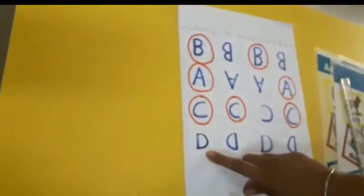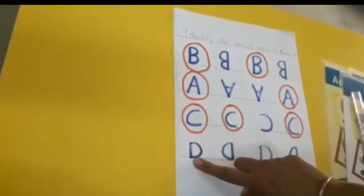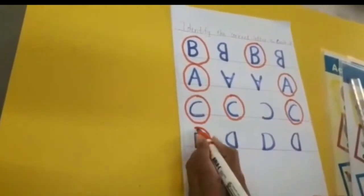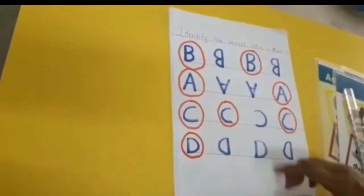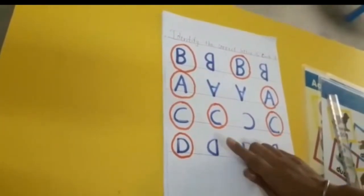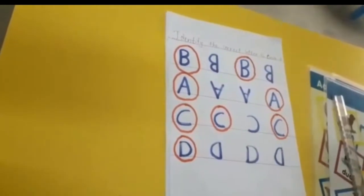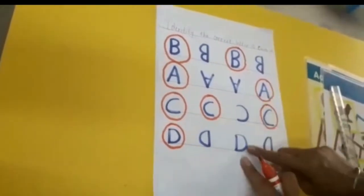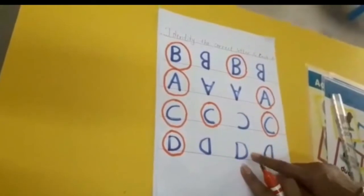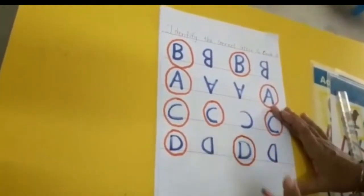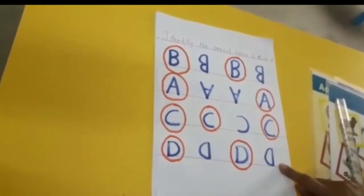Now, letter D. This is letter D — is it properly written? Yes, so let's do a circle on it. This is letter D — is it proper? No, so we will circle it. Is it proper letter D? Yes, we will do circle on it. And is this letter D proper? No, so we will circle it.